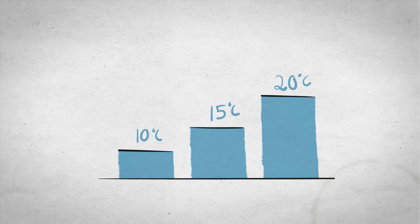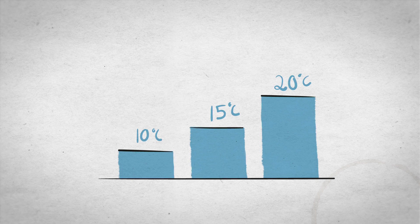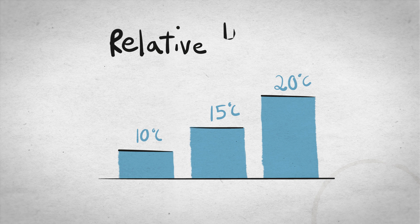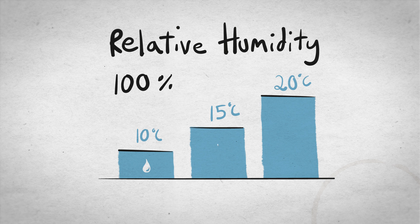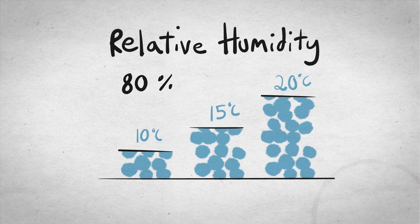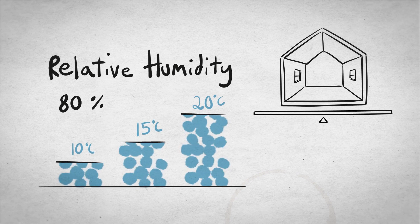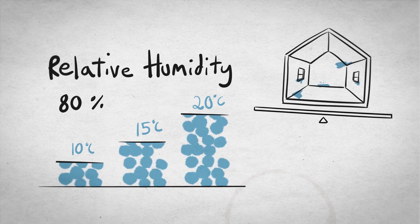Because air can hold different amounts of moisture at different temperatures, we measure how full the air is by something called relative humidity. If we have 100% relative humidity, then the air is full up and the vapour becomes liquid water. But even when there is no condensation, high relative humidity can be uncomfortable and lead to mould and other problems.